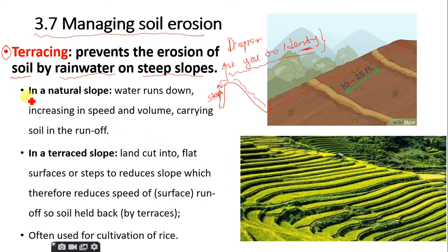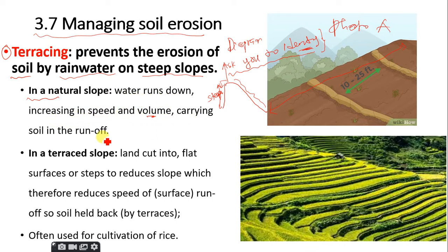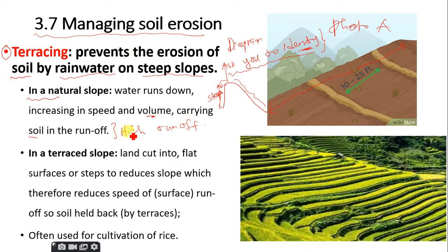Let's look at terracing. First, in a natural landscape — Photograph A — you find that water runs down, increasing in speed and also volume, carrying soil in the runoff. That means in a natural situation there will be high surface runoff, obviously leading to high movement of soil particles and therefore a high rate of erosion.